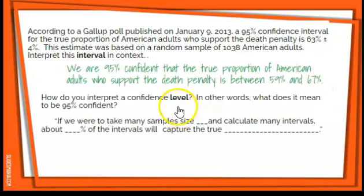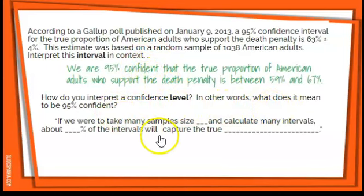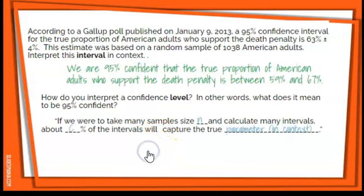How do you interpret a confidence level? This is different from interpreting the interval. What does it mean to be 95% confident? It means: if we were to take many samples of size n and calculate many intervals, about 95% of the intervals will capture the true parameter in context. It's saying that if I do the sampling over and over and calculate many confidence intervals, about 95% of them will capture the real value — the true parameter.